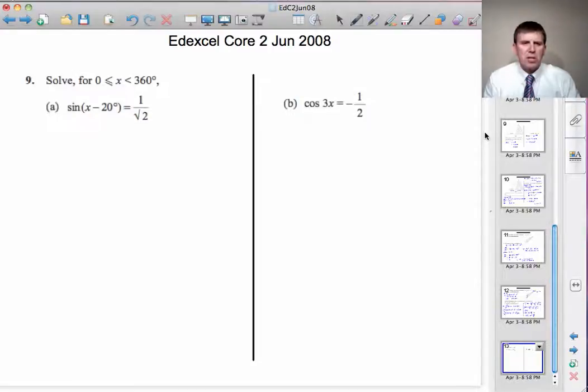The final question, question 9. Solve for x between 0 and 360 degrees, sine of x minus 20 is 1 over root 2.